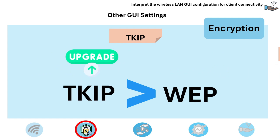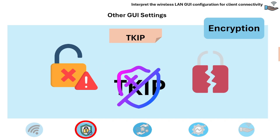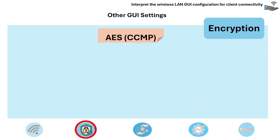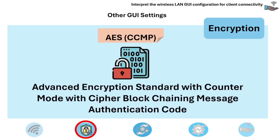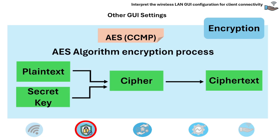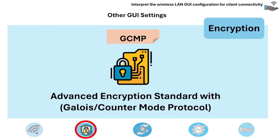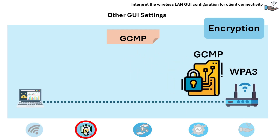TKIP, or Temporal Key Integrity Protocol, was an older encryption protocol introduced as a security upgrade to WEP. It is now considered insecure by modern standards and has known weaknesses. Next is AES with CCMP, or Advanced Encryption Standard with Counter-Mode with Cipher Block Chaining Message Authentication Code, the encryption used in WPA2. It provides robust security using AES for encryption and CCMP for data integrity and authenticity. GCMP is an enhancement over AES-CCMP, part of the WPA3 standard, and is more efficient with faster encryption and authentication.